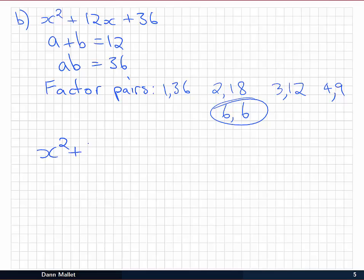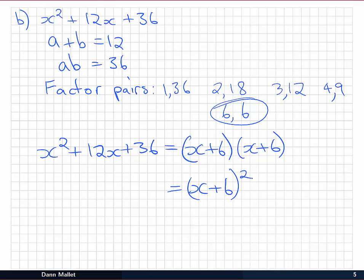So we then go ahead and put that together. x² + 12x + 36 is equal to x + a, or 6 in this case, and x + b, which is again 6. And if you like you can write that as (x + 6)² . And that's our factorised form.